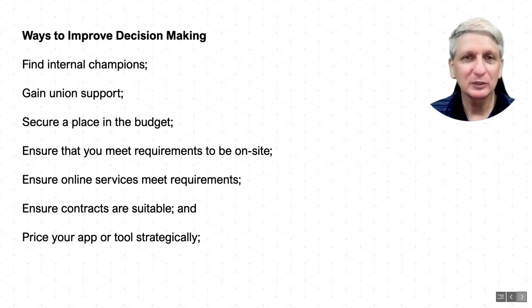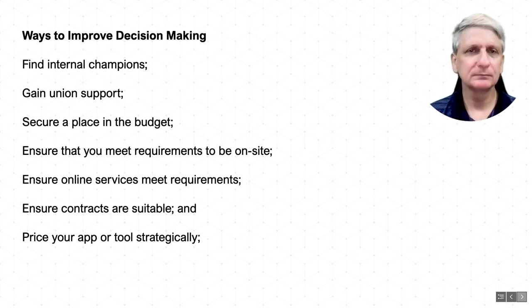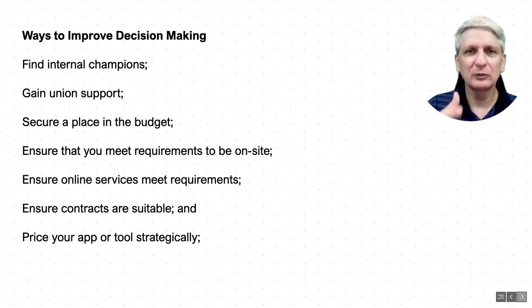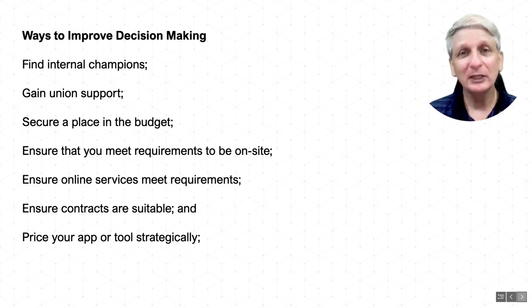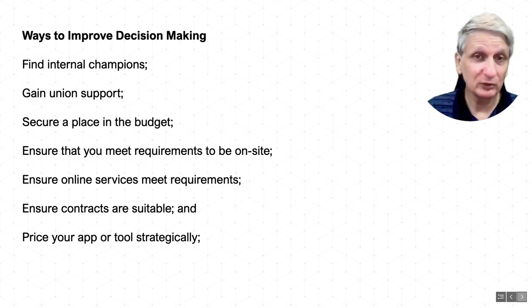Some other ways of improving the decision-making processes around getting your application supported within organisations is to find champions. Some of the big tech companies have structured programs to develop champions — Apple, Microsoft and Google all have structures in place to engage educators, particularly those with a lot of experience, to know about different approaches, products and edtech innovations, and to share that through conferences, workshops and engagement with schools and research.